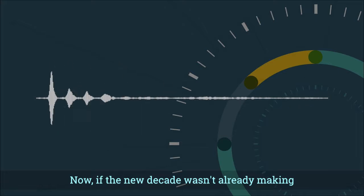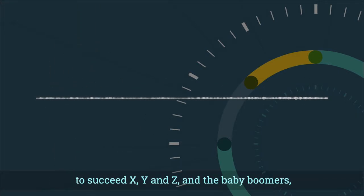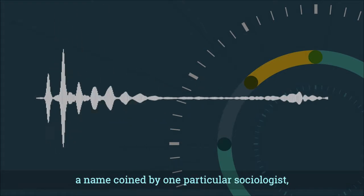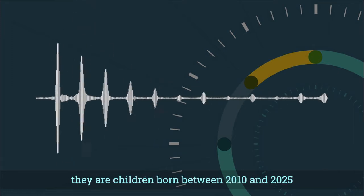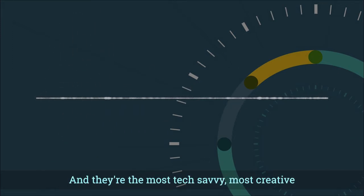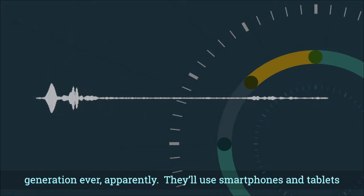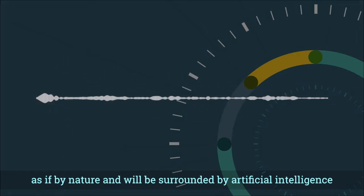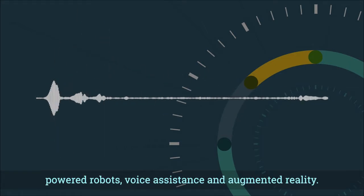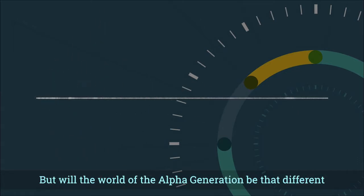Now, if the new decade wasn't already making you feel old, consider welcoming the latest generation to succeed XYZ and the baby boomers. They are the alpha generation, a name coined by one particular sociologist. They're children born between 2010 and 2025. And they're the most tech-savvy, most creative generation ever, apparently. They'll use smartphones and tablets as if by nature and will be surrounded by artificial intelligence-powered robots, voice assistants and augmented reality.